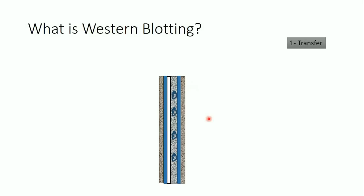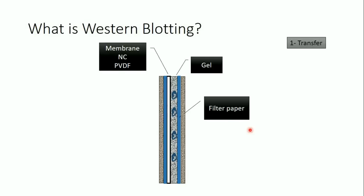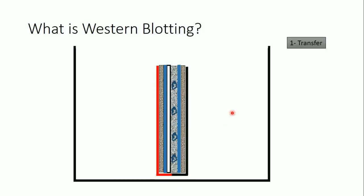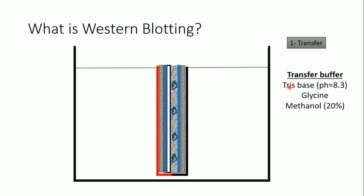So in the plastic container I have the filter paper, the gel, the membrane, and the sponge. I place everything in a chamber and fill it with a buffer called the transfer buffer. This buffer is composed of Tris-base at pH 8.3, glycine, and methanol. Methanol is very important in the transfer buffer because it is used to detach SDS molecules from the proteins and facilitate the proteins binding to the membrane.